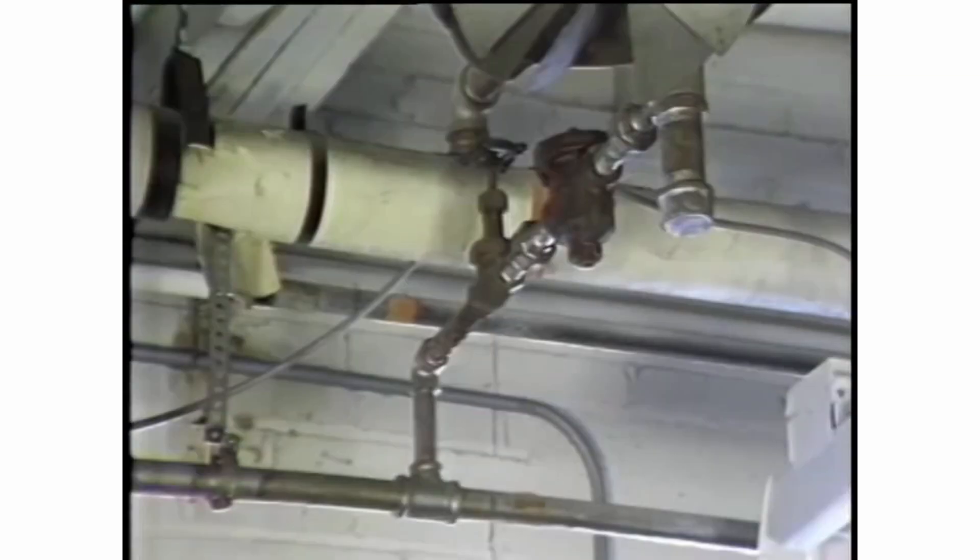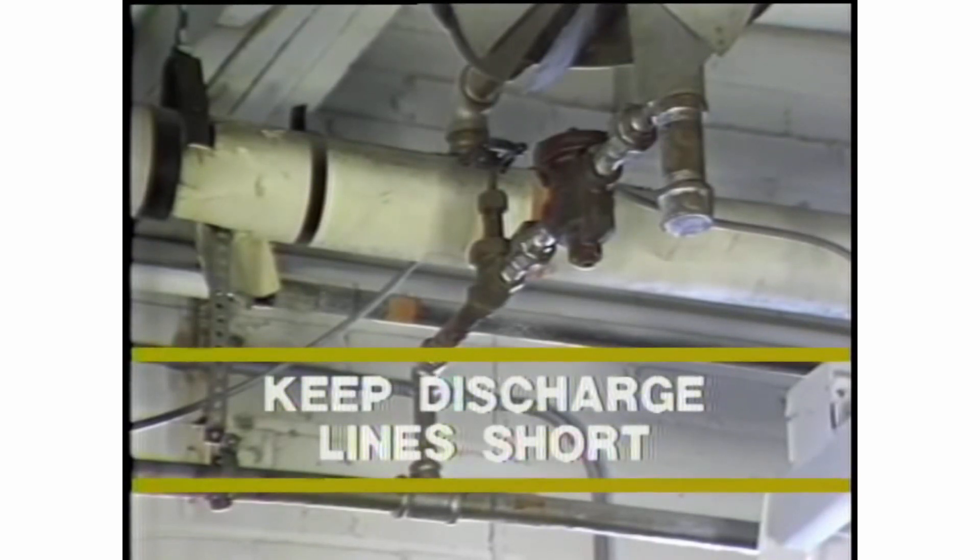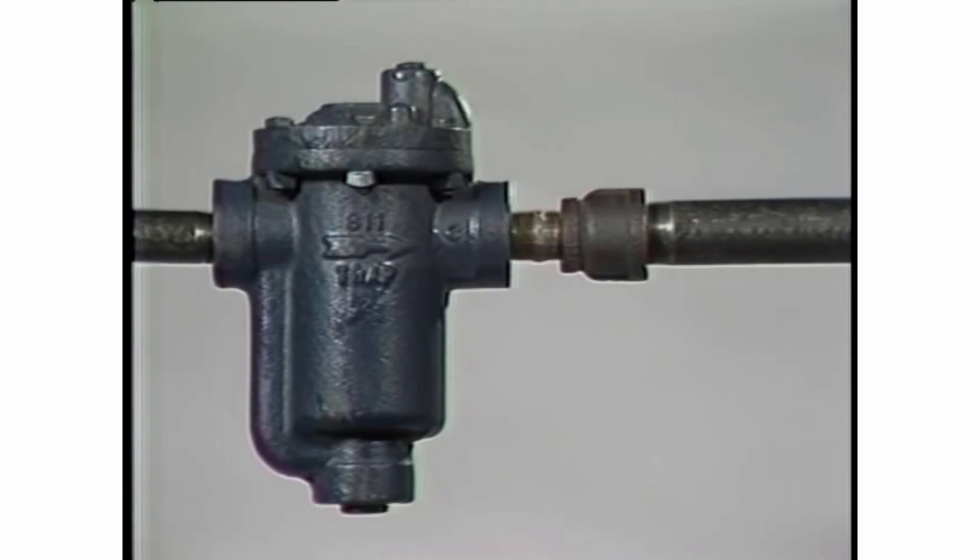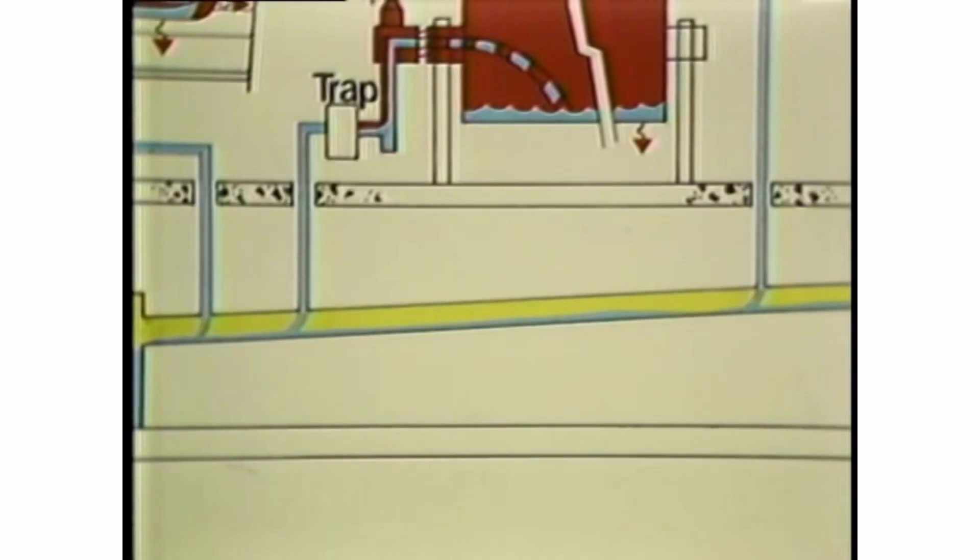Keep discharge lines as short and straight as is practical. Assuming the trap to be properly sized for the application, use pipe the same size as the trap connection. If pressures to the trap are very low, increase the discharge line one pipe size. The return main must be sloped in the direction of flow at least one quarter inch per ten feet.